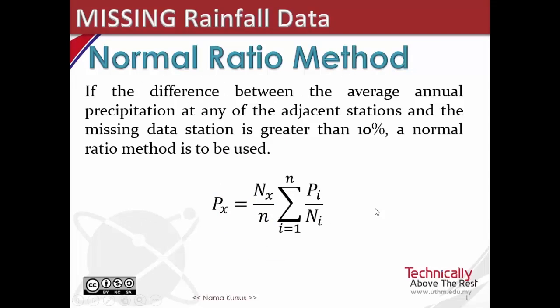If the difference between the average annual precipitation at any of the adjacent stations and the missing data station is greater than 10%, a normal ratio method is to be used.